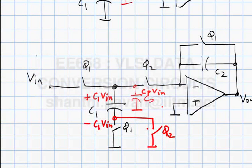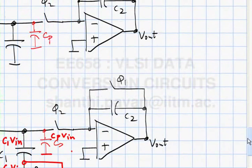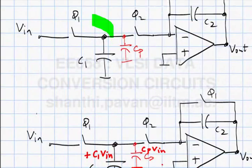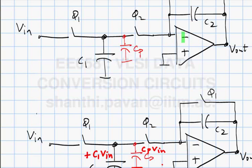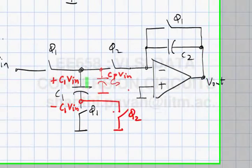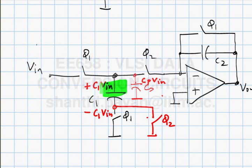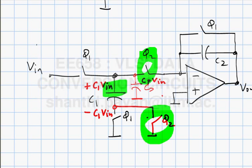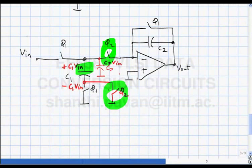If we close phi2 in the normal way, how much charge gets into the infinite capacitor? Still the same amount — (C1 + Cp) times Vin goes into the infinite capacitor. So connecting the top plate to the infinite capacitor and the bottom plate to ground is no better than before.